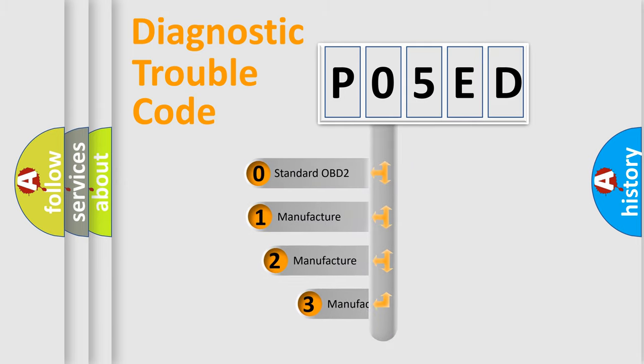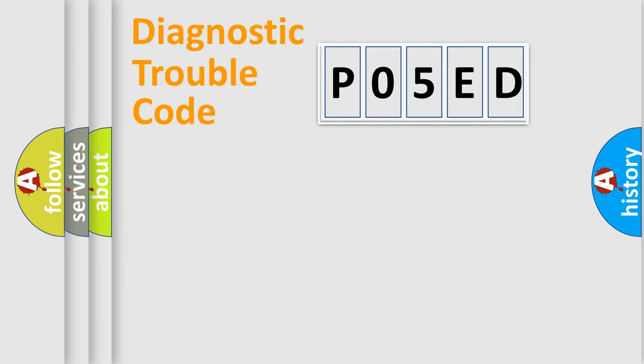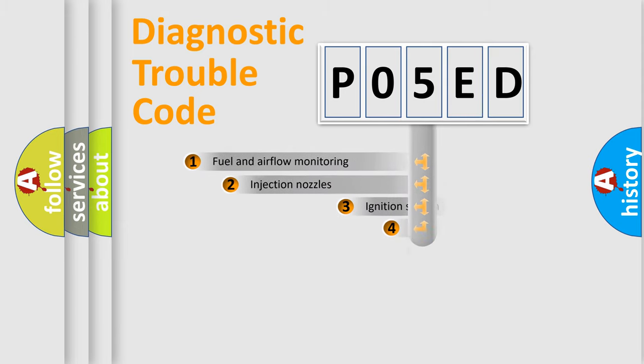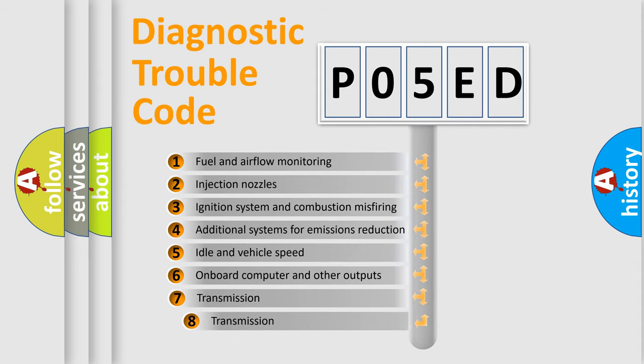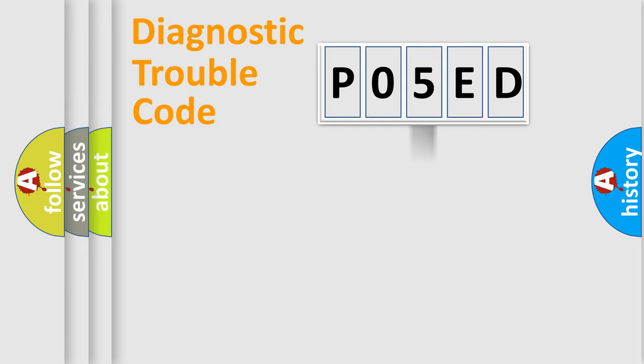If the second character is expressed as zero, it is a standardized error. In the case of numbers 1, 2, or 3, it is a manufacturer-specific expression of the car specific error. The third character specifies a subset of errors. The distribution shown is valid only for the standardized DTC code.